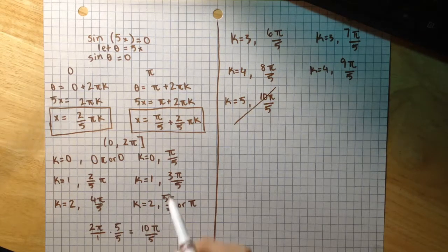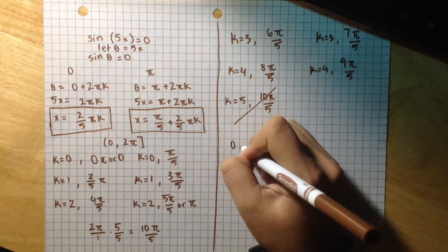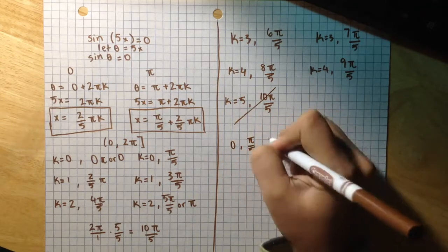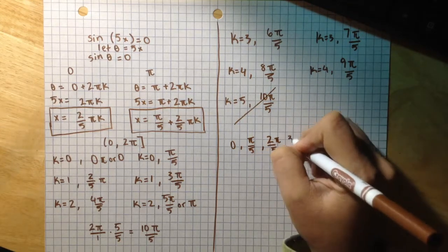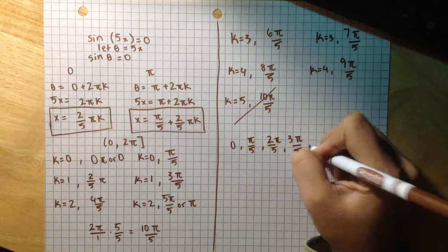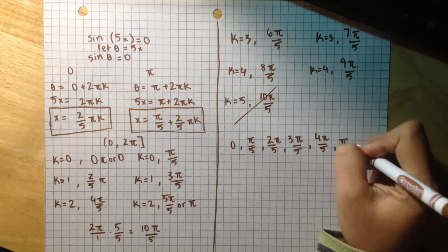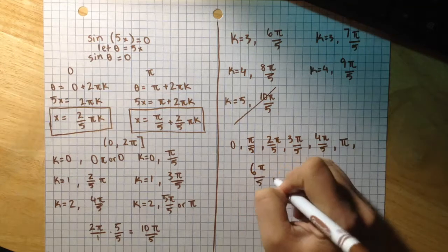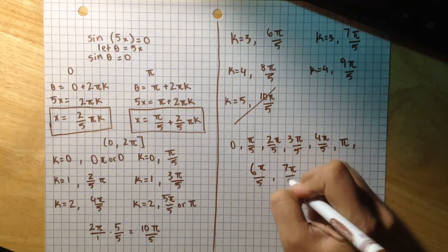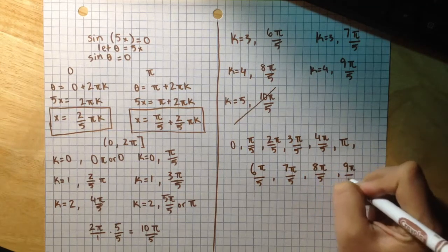we have to answer all of these values as a comma separated list. So I'll just write 0, π/5, 2π/5, 3π/5, 4π/5, 5π/5 or π, 6π/5, 7π/5, 8π/5, and 9π/5. And these are all the values within this interval that work for this equation.